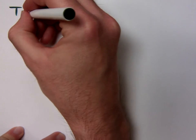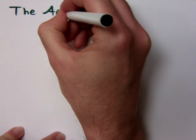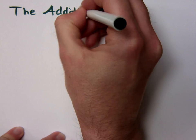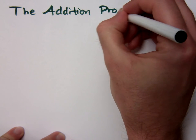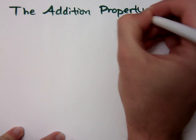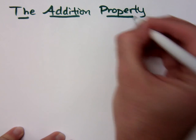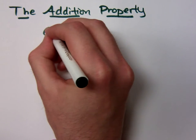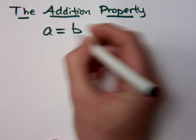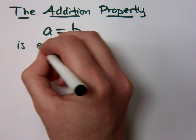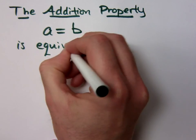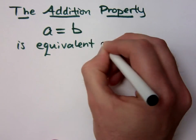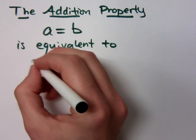One of the first things that we have to help us solve equations is the addition property. Now here's what the addition property says. It says that if you have an equation A equals B, then this equation is equivalent to the following.